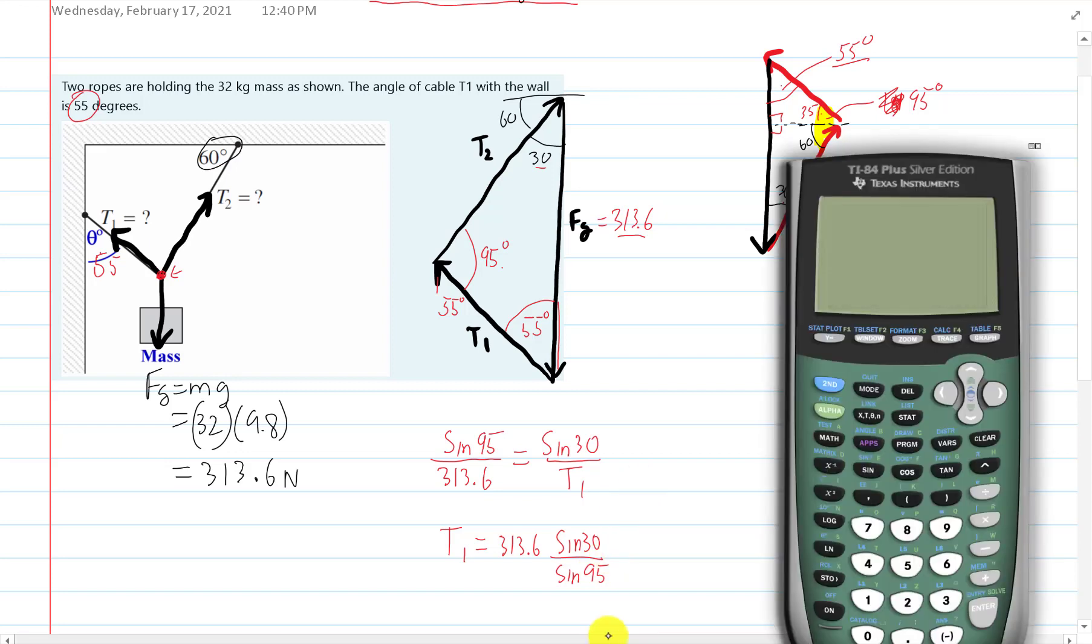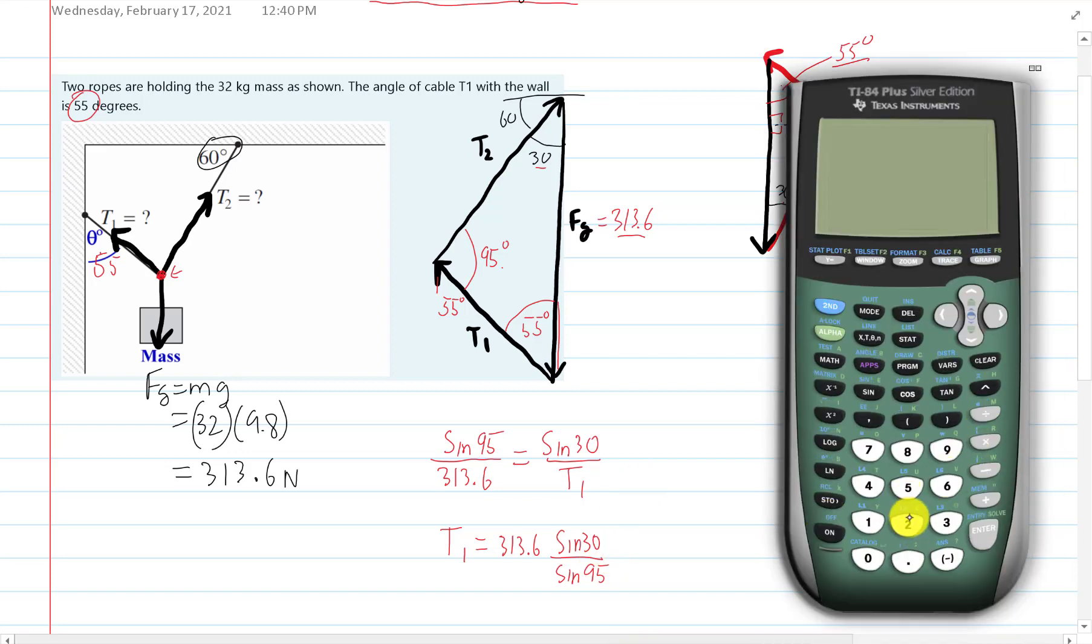I pull up my calculator and I get that was 32 times 9.8, which is the 313.6, that's its weight, times it by the sine of 30 and divide it by the sine of 95, and I get 157.4.